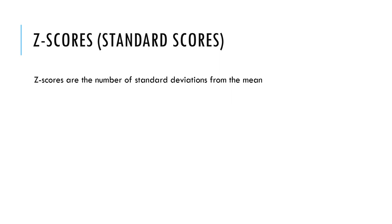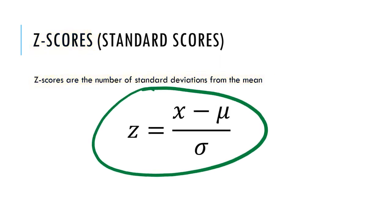All this talk about the number of standard deviations from the mean — it's important to know that this idea, the number of standard deviations from the mean, is very important. It's so important that statisticians made a definition for it called z-scores. Sometimes you'll see it written as standard scores. Z-scores are the number of standard deviations from the mean. There's a very nice formula: z equals x minus mu divided by sigma, where mu is the mean and sigma is the standard deviation.